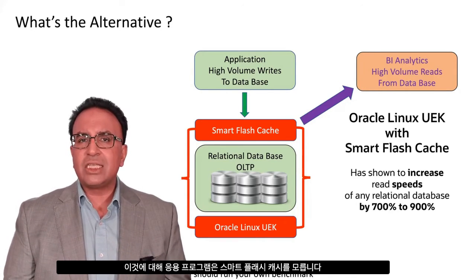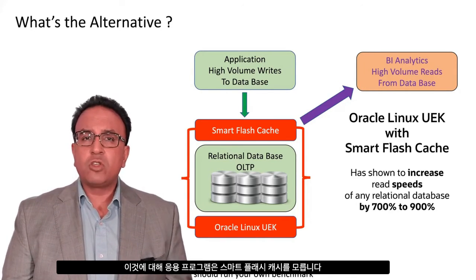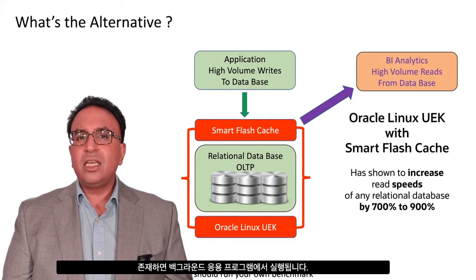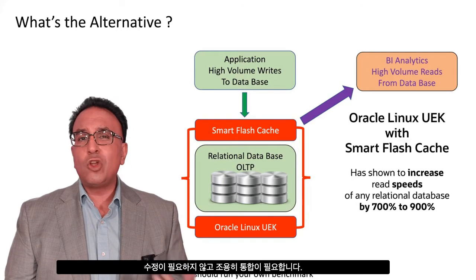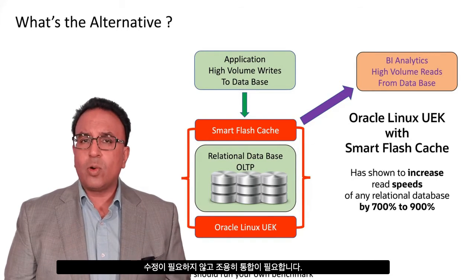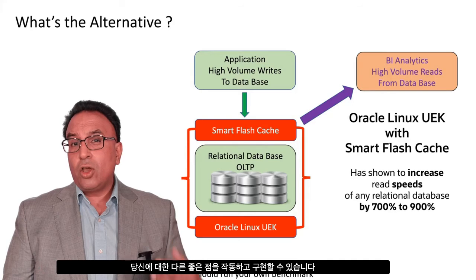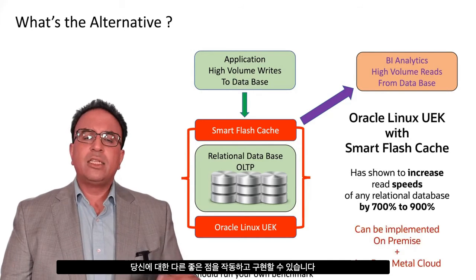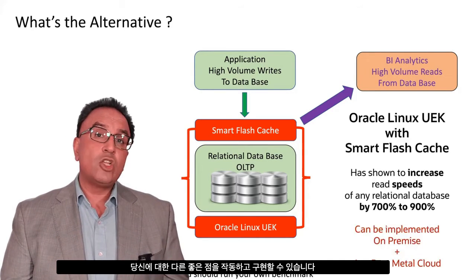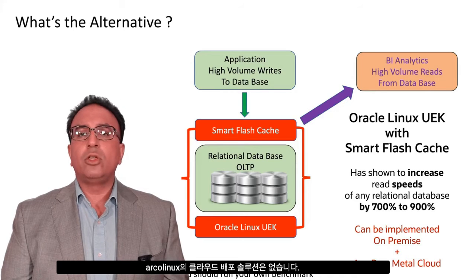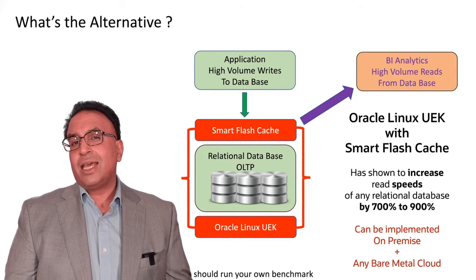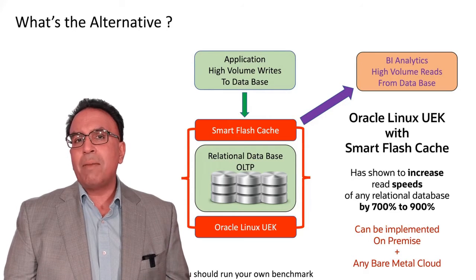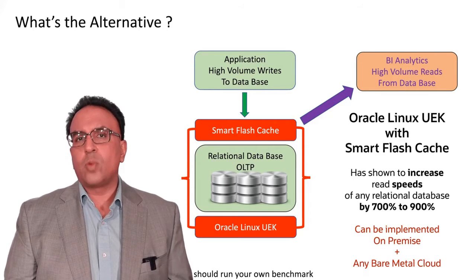The great thing about this is the applications don't know Smart Flash Cache exists — it's incognito. It just runs in the background. As far as the application is concerned, there are no modifications required, no integration required. It just works. Smart Flash Cache can be implemented on-premise — it's not a cloud-deployed solution from Oracle Linux. Not only can it be deployed on-premise, it can also be deployed in any cloud on Bare Metal if you choose to do that as well.